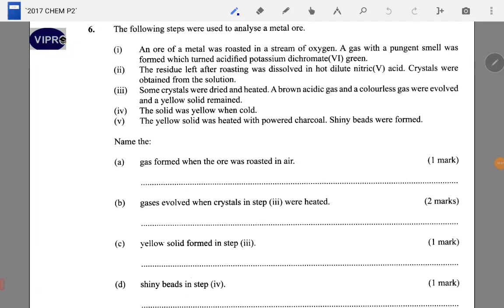Question 7: The following steps were used to analyze a metal ore. An ore of metal was roasted in a stream of oxygen and a gas with a pungent smell was formed which turned acidified potassium chromate to green. The pungent smell and the fact that it turns acidified potassium chromate to green should leave us thinking.